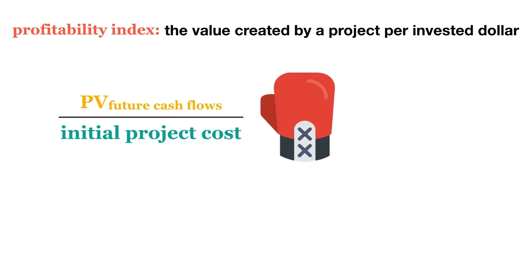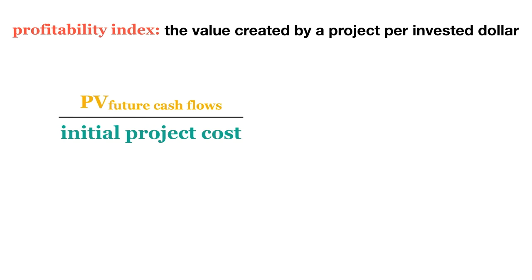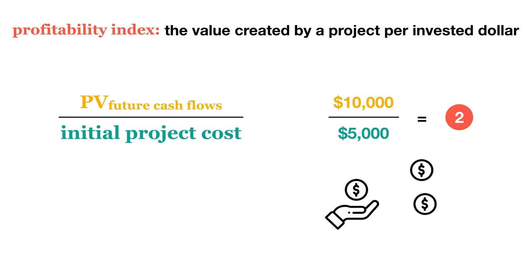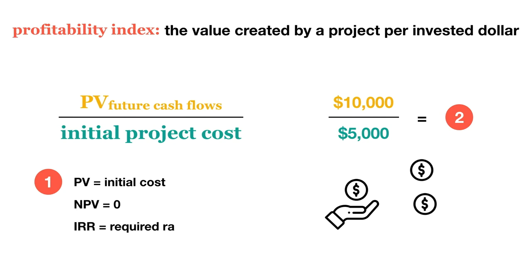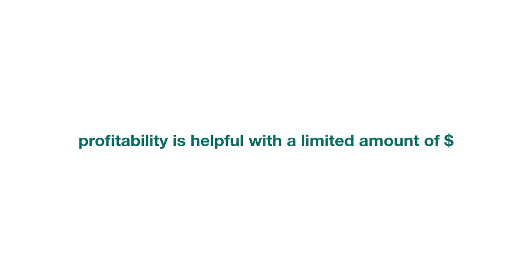For example, if the present value of an investment's future cash flows is $10,000 and its initial cost is $5,000, then its profitability index is 2 — for every dollar we spend, we earn $2 when we adjust for risk and the time value of money. If the profitability index is 1, this means the present value of our returns equals the initial cost, which is the same as saying our NPV is 0 and the IRR equals our required rate of return — so we would just break even, and we'd be indifferent between accepting and rejecting the project. Understanding a project's profitability is helpful when we have a limited amount of cash to spend, as we'd like to get the most bang for our buck.